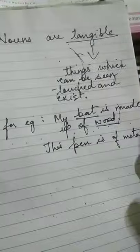Similarly, this pen is of metal — the pen I am holding is made up of metal. Also, the clothes which you are wearing: what type of clothes do you wear in summer? We usually wear cotton clothes, so that cotton is your material. Nouns that name materials or substances that we see and touch, or ingredients for making things, are called material nouns.